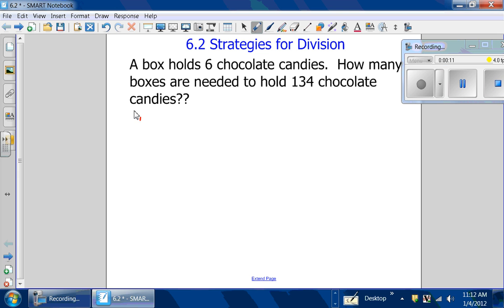So what I did was, 10 boxes times 6 candies each equals 60. And I did this again, 10 times 6 equals 60. Then I did 2 times 6 equals 12.